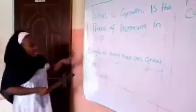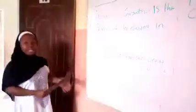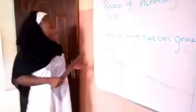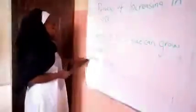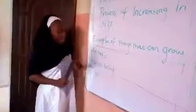We are going to look at the examples of things that can grow. Number one: animals. Animals can grow — animals increase in size and grow bigger. Do you understand?